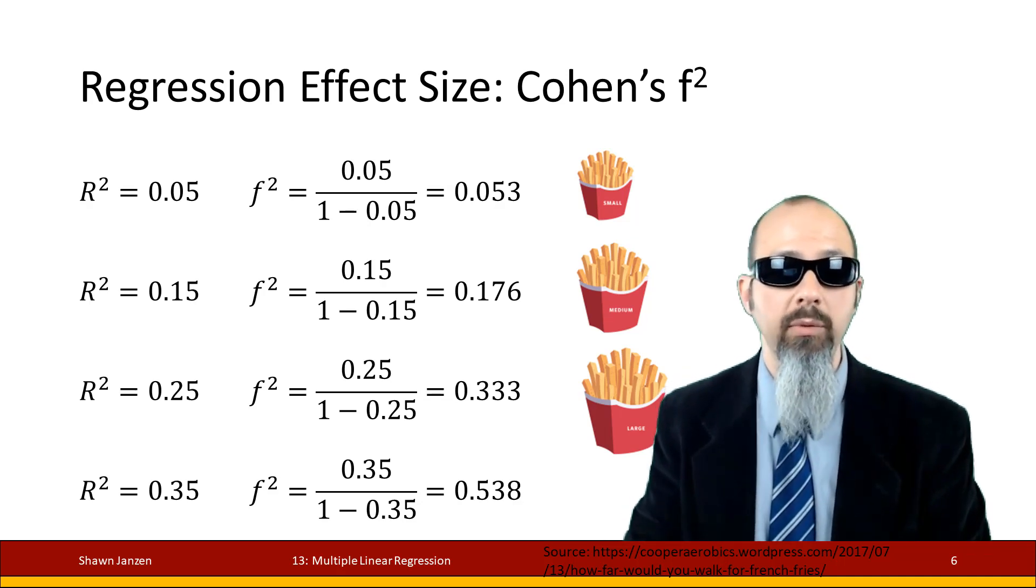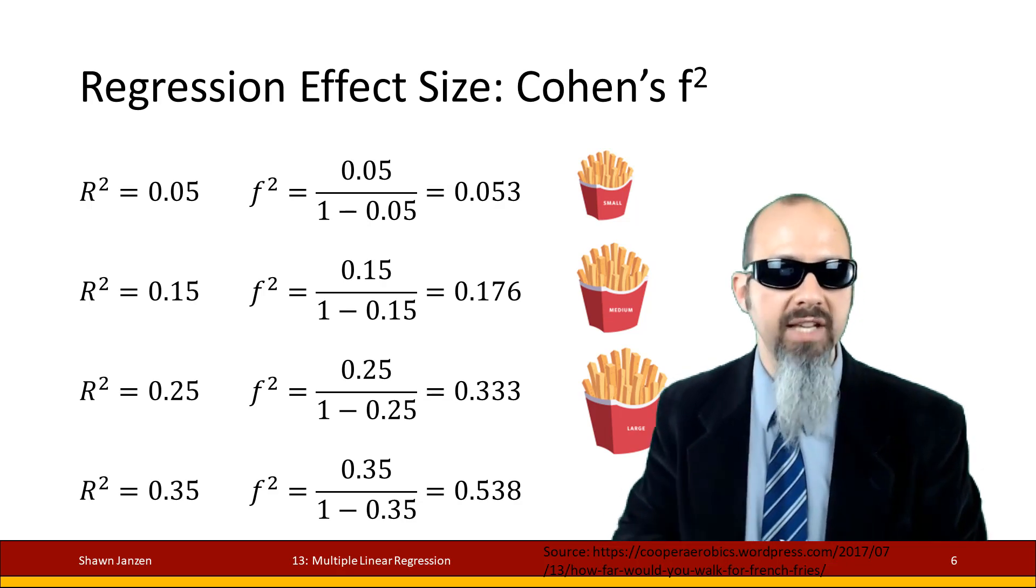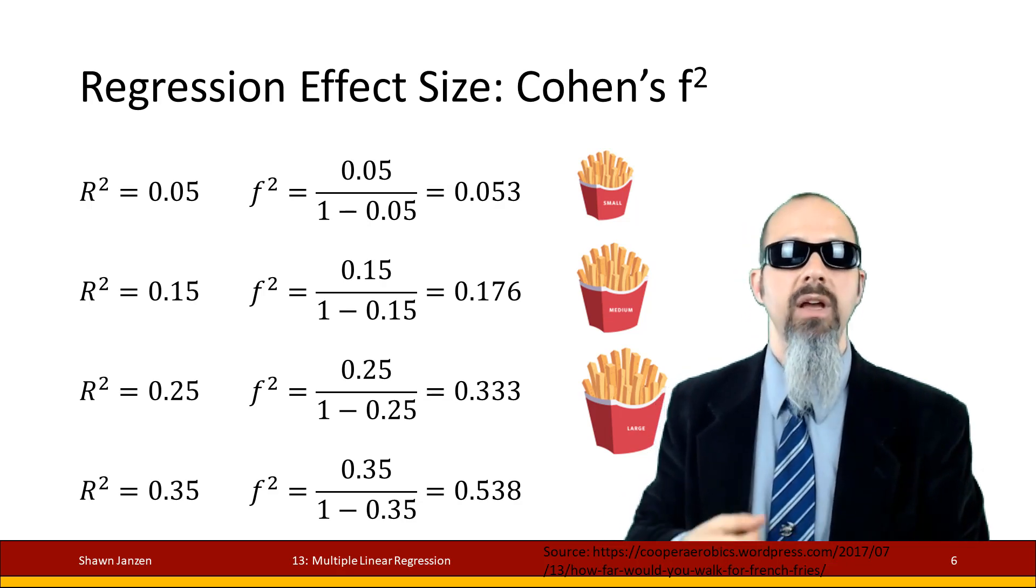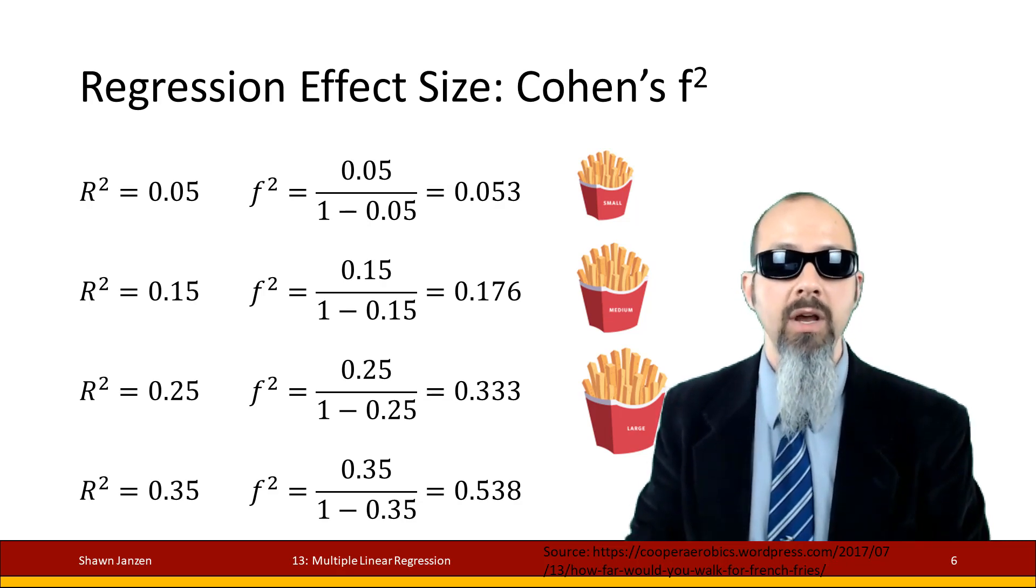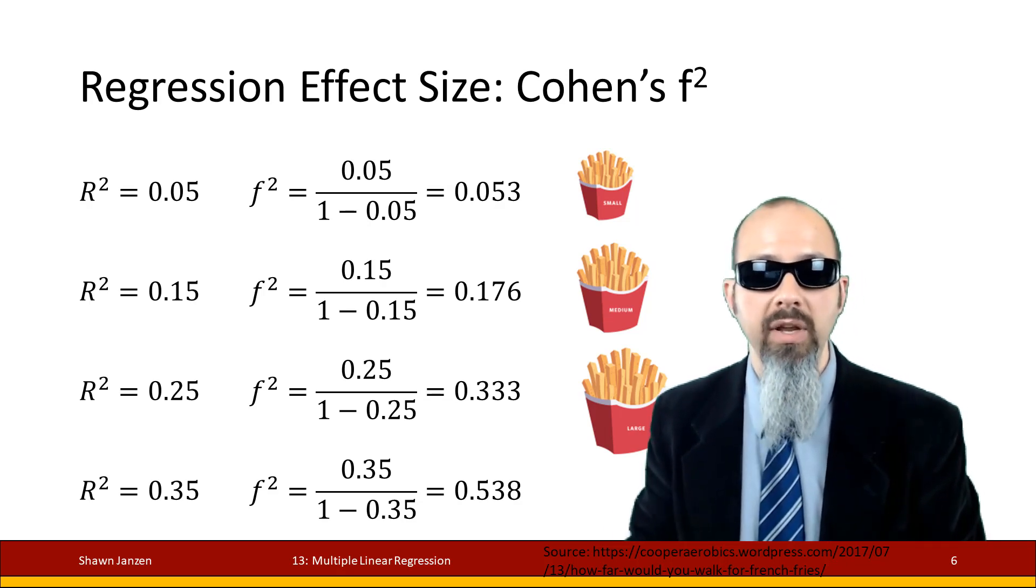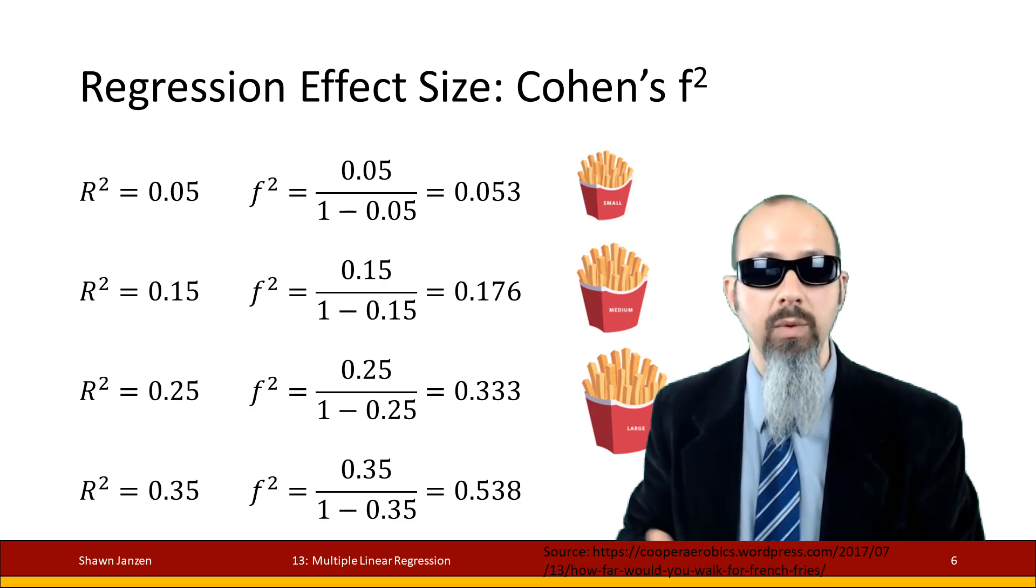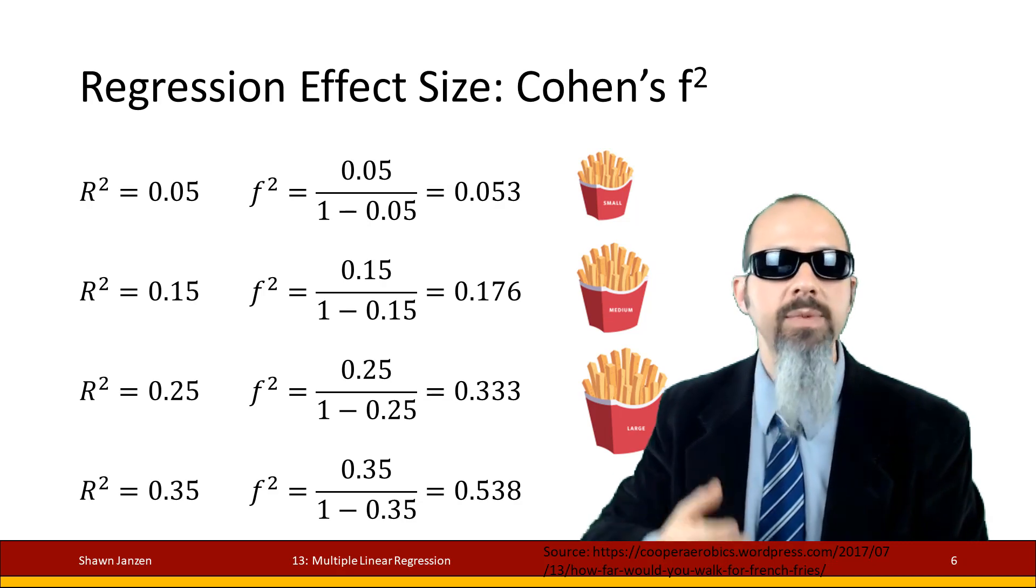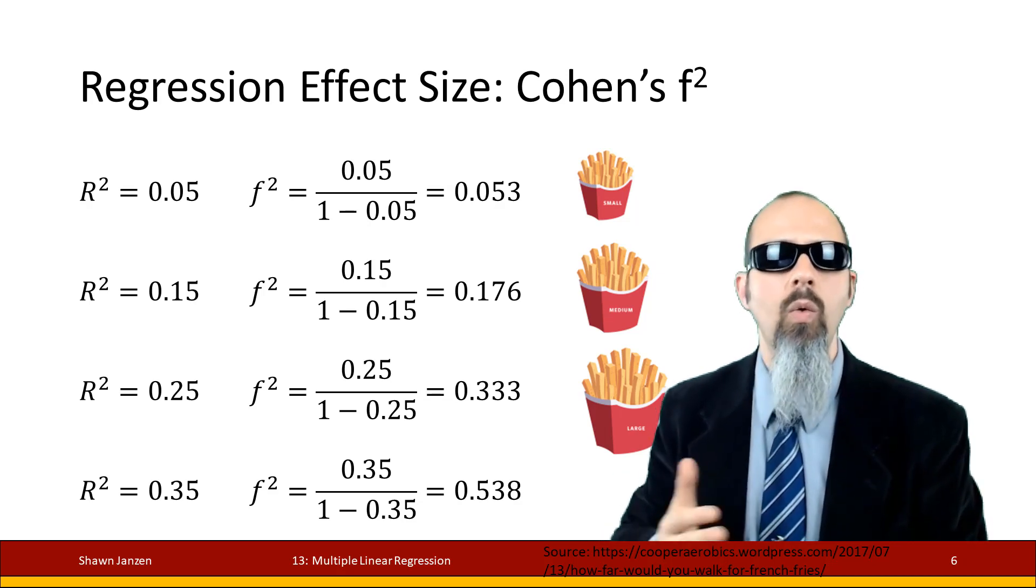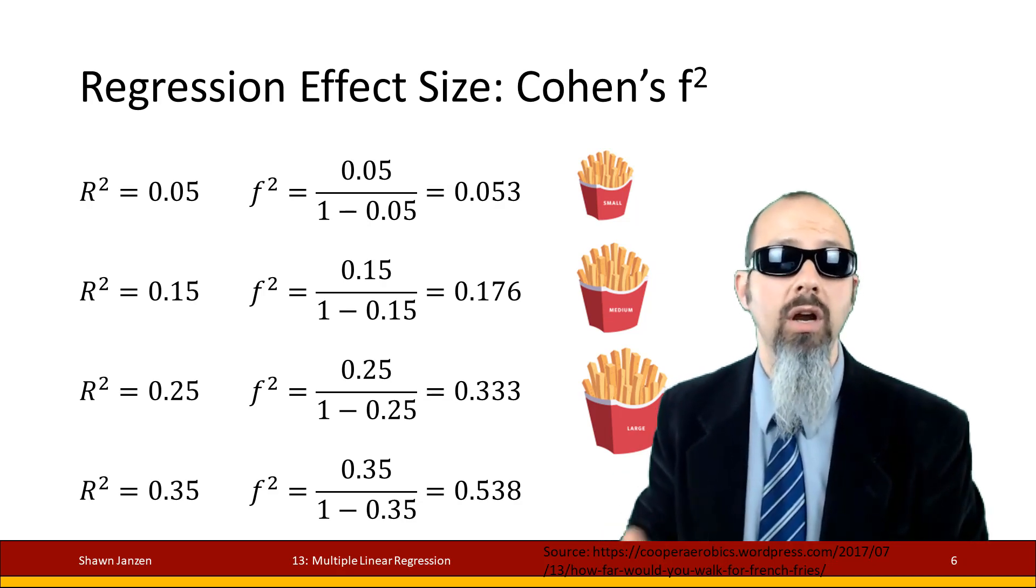An r² of 0.35 (35% of variation explained) corresponds to an f² of 0.538, which is a nice sizable effect size. They can get quite large when you're getting larger and larger effects.